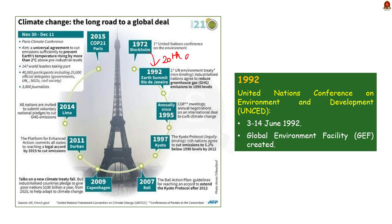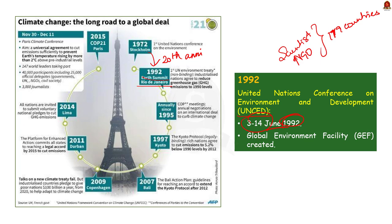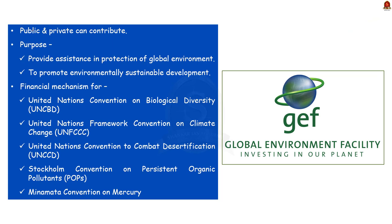The next major event is the 20th anniversary of the Stockholm Convention. To celebrate that, the United Nations Conference on Environment and Development — UNCED — was held in 1992, also known as the Earth Summit. It was held in Rio de Janeiro, Brazil from 3rd to 14th June 1992. This conference brought together political leaders, diplomats, scientists, representatives of the media, and non-governmental organizations from 179 countries. One major result was the creation of the Global Environment Facility, or GEF, which collects funds from public or private sources to provide assistance in the protection of the global environment.